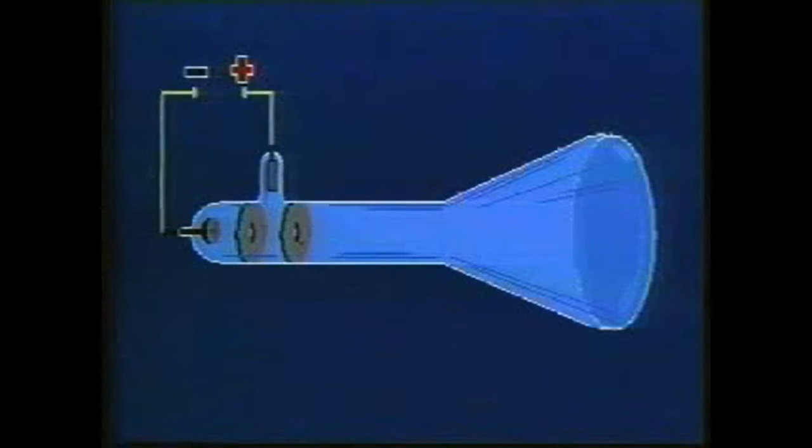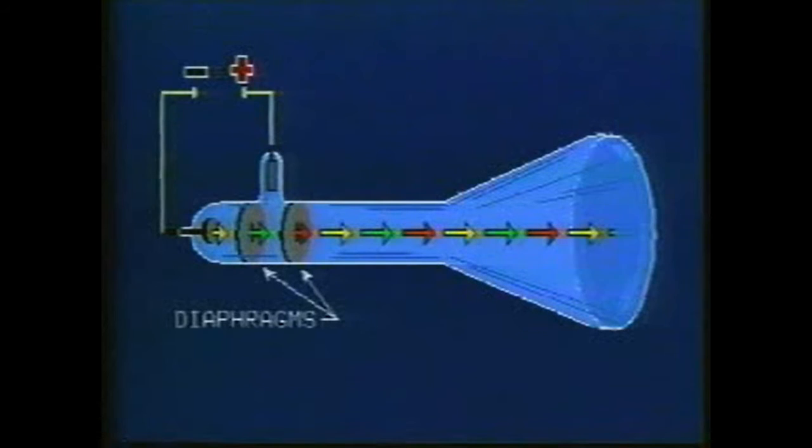In 1897, J.J. Thompson designed a specialized cathode ray tube. A cathode ray particle leaves the cathode and travels between charged diaphragms to focus the rays in a straight line to strike a fluorescent screen.